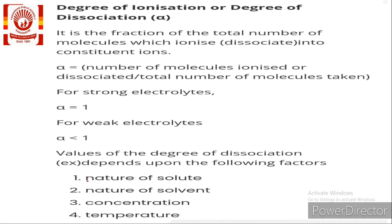Since acetic acid does not undergo complete dissociation, the fraction of total moles that can be dissociated or ionized is represented by the term degree of ionization or degree of dissociation. Degree of dissociation is the fraction of the total number of molecules which ionize into constituent ions, represented by the symbol alpha, where alpha equals the number of molecules ionized or dissociated divided by the total number of molecules. For strong electrolytes, alpha is always equal to 1, and for weak electrolytes alpha is always less than 1.